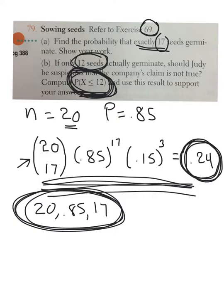And when I put it in the calculator, you get 0.005. So that's a very low probability that that would actually happen. So it's either a really bad pack of seeds that got damaged somehow, or the company is not really being truthful about their claim that 85% germinate. Okay, that is number 79.